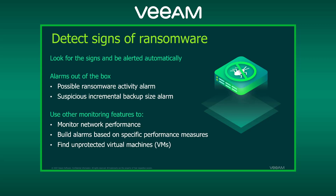There's also the suspicious incremental backup size alarm. If we see backups suddenly growing, that might mean things are encrypting — there's more data to process, and that usually doesn't happen for no reason. We also want to monitor network performance. If we see a VM or host suddenly transmitting a ton of data, that could be a sign of exfiltration — someone copying data out of the environment. The great thing about Veeam ONE is you can build alarms based on any specific performance measures you want and group them together.